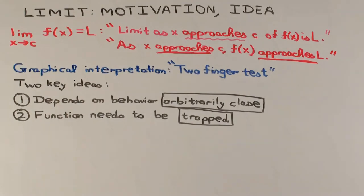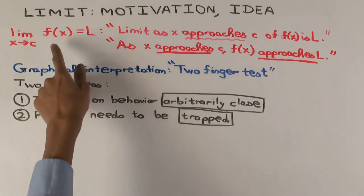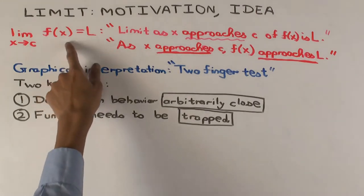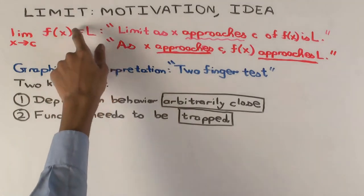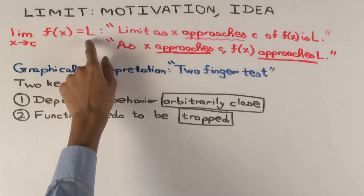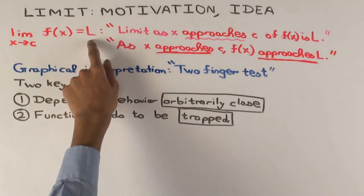What does this mean? Well, roughly what it means is that as x is coming closer and closer to c, f(x) is sort of hanging around L — it's coming closer and closer to L.